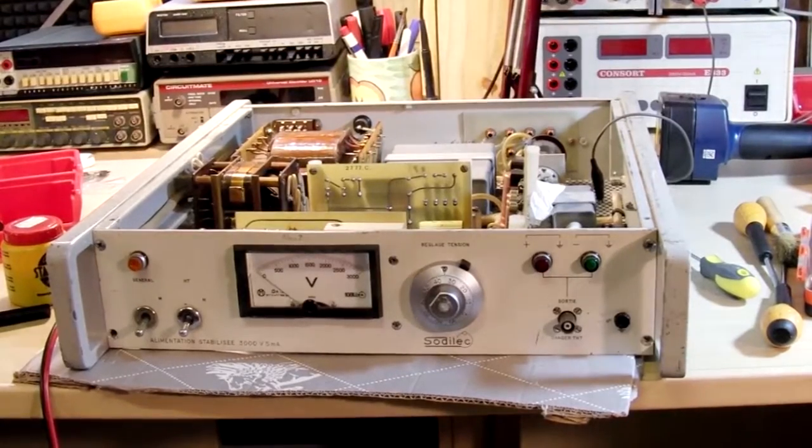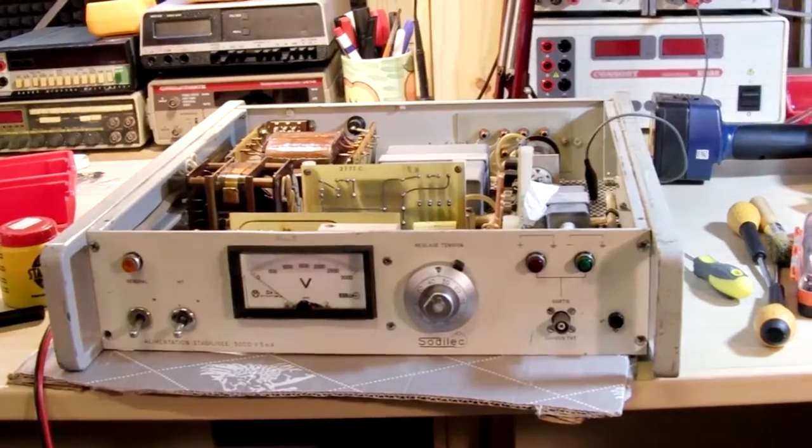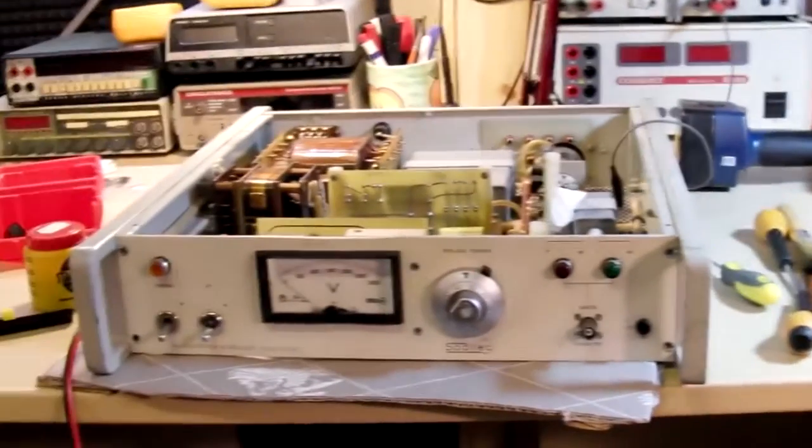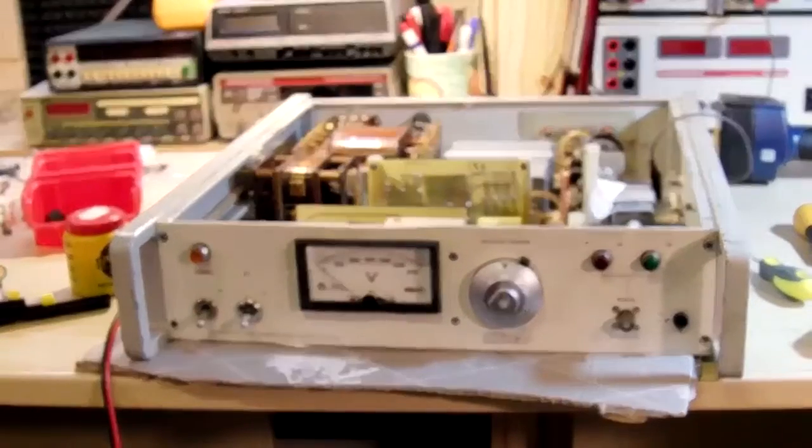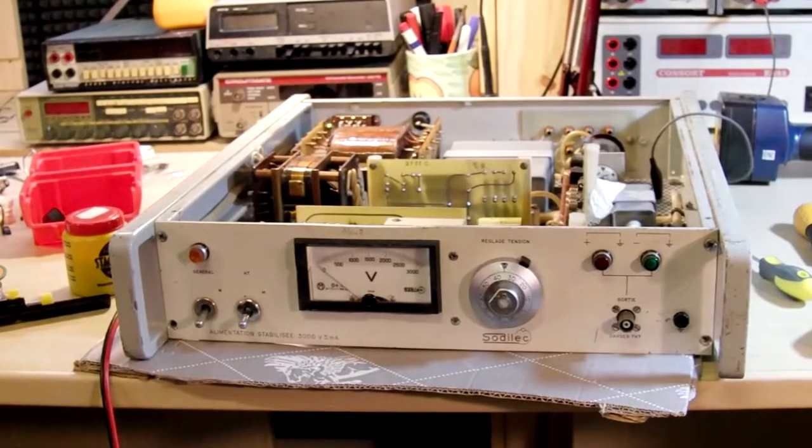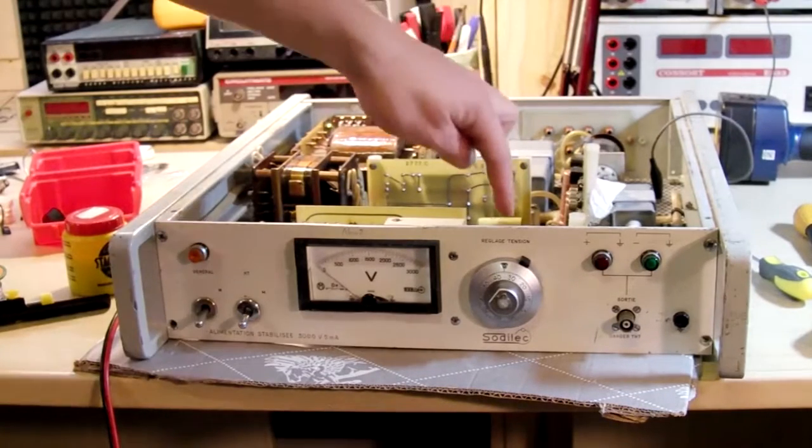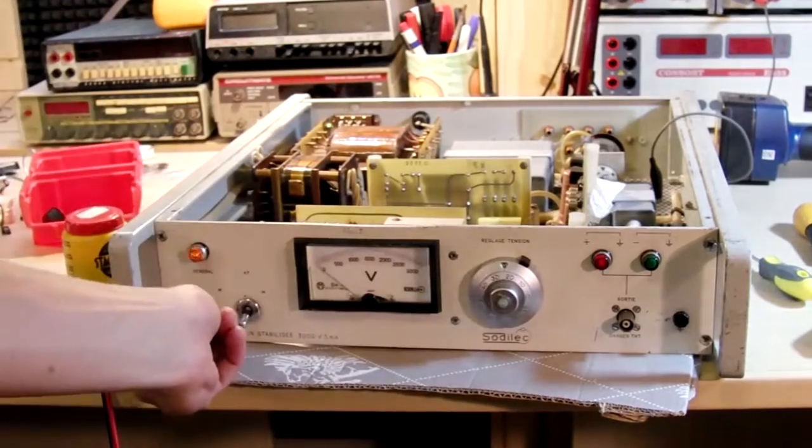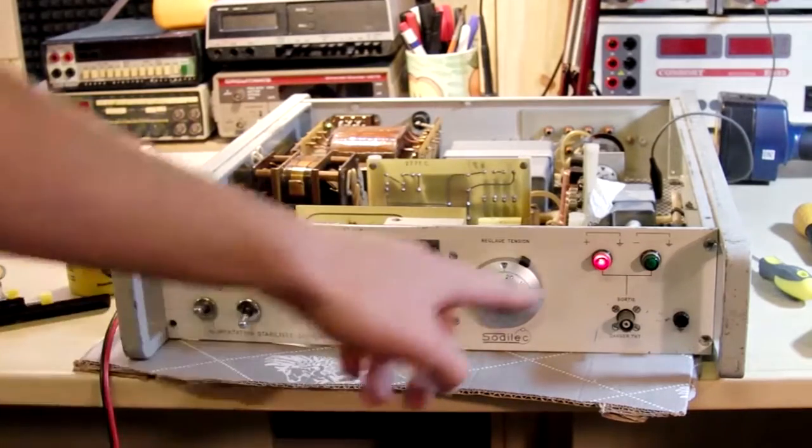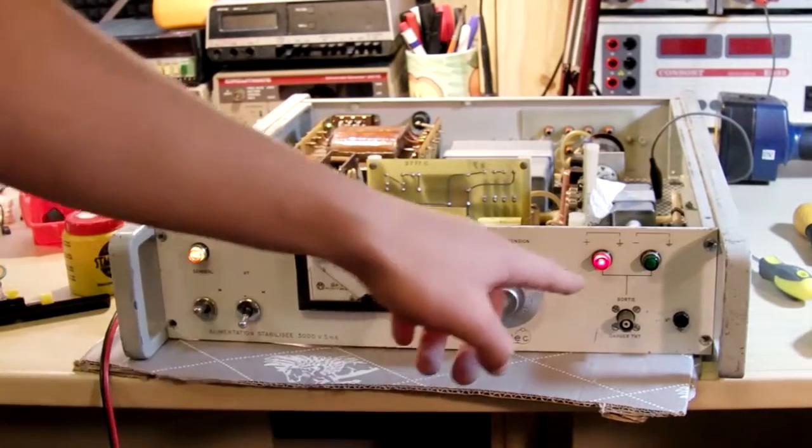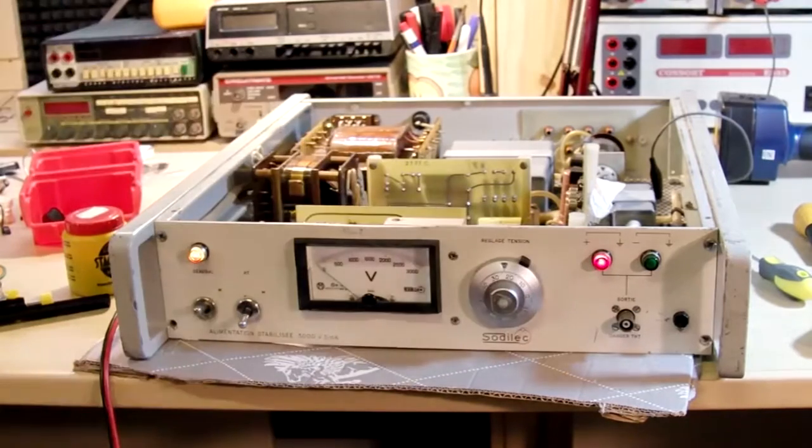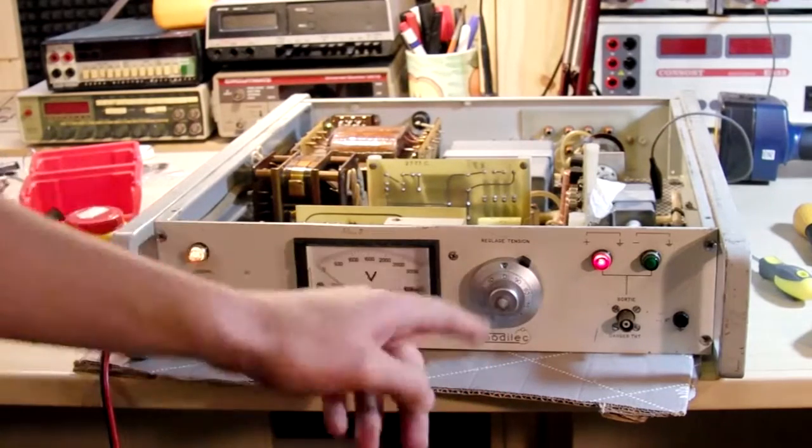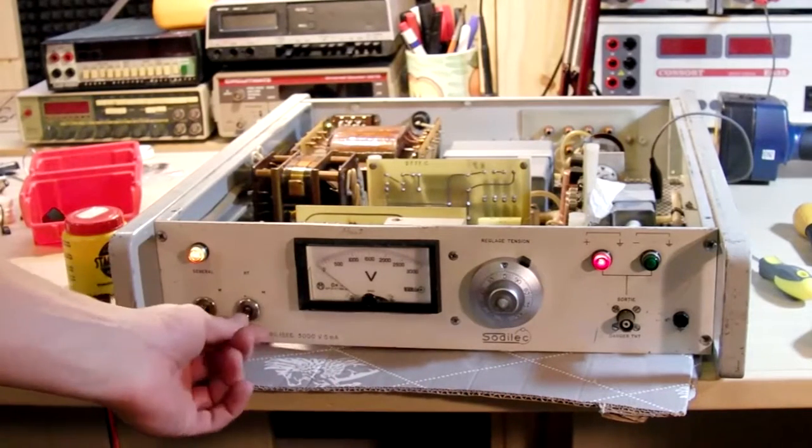Alright so I cleaned it up and connected to my isolation transformer. So let's actually turn it on and see if it works. I reconnected the potentiometer. So now it actually turns. Alright, a little lights come on, which is promising. Set to zero volts. Turn on the high voltage.